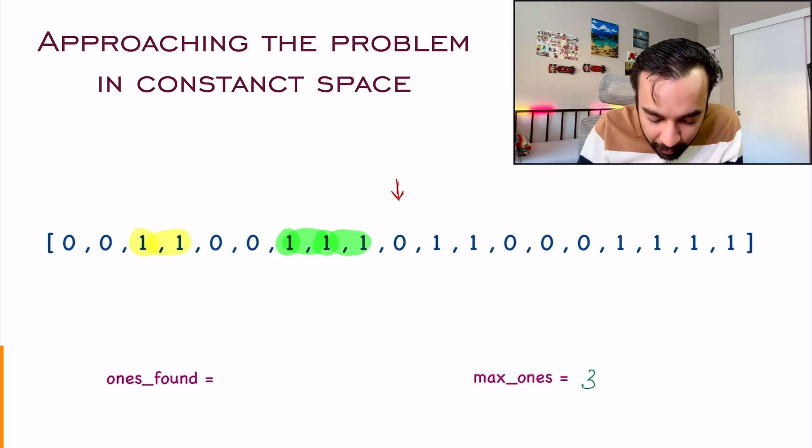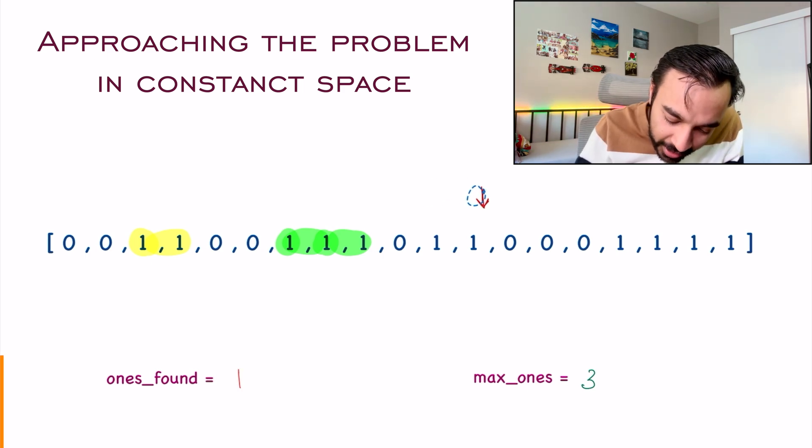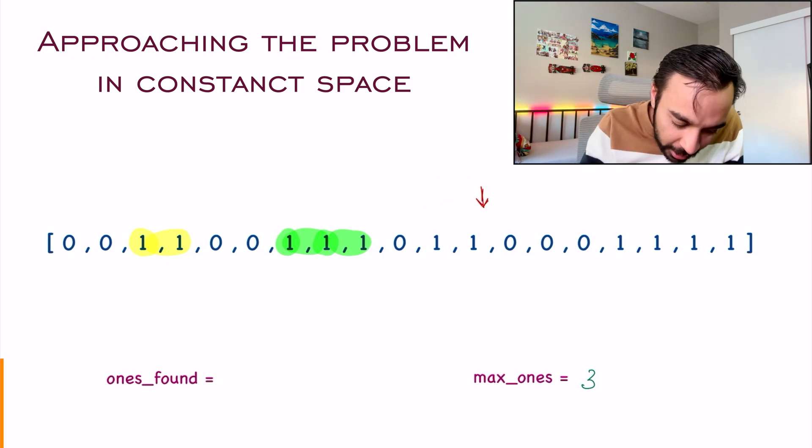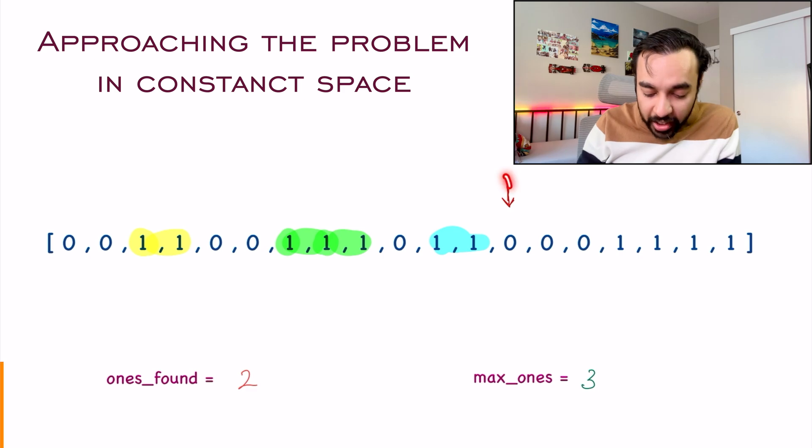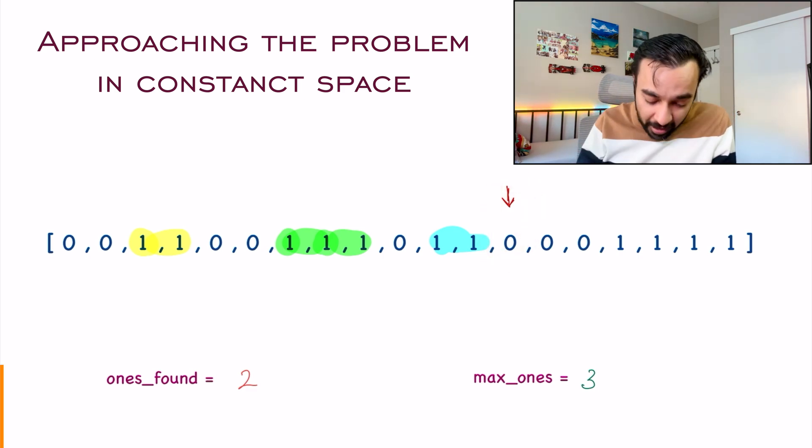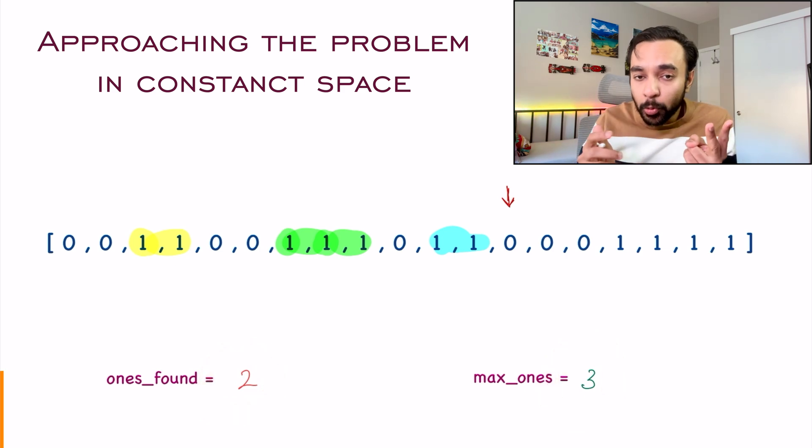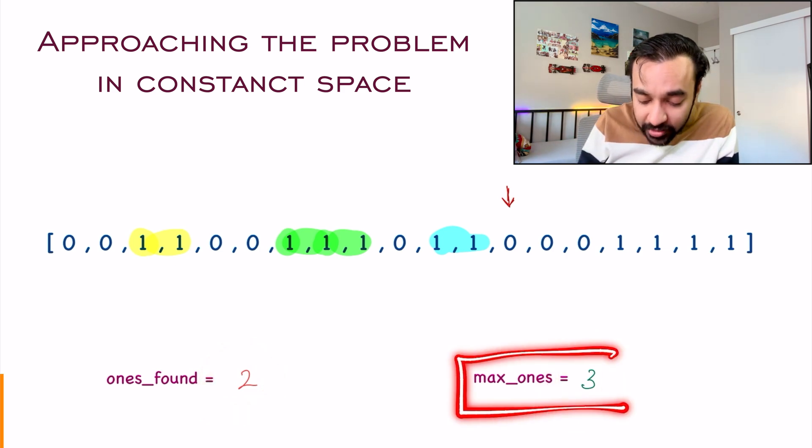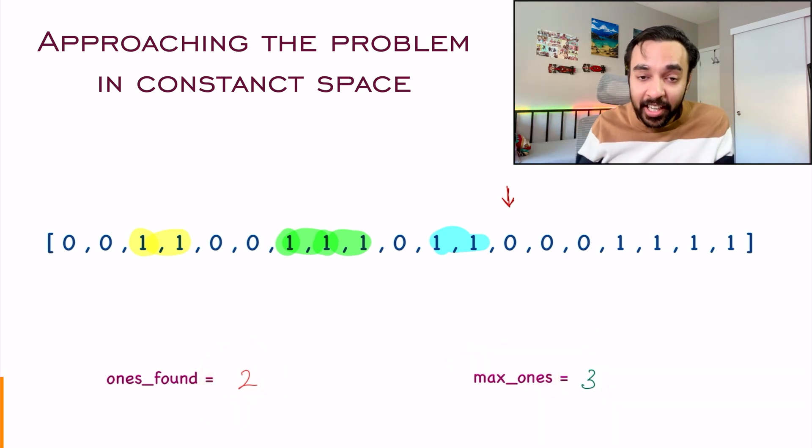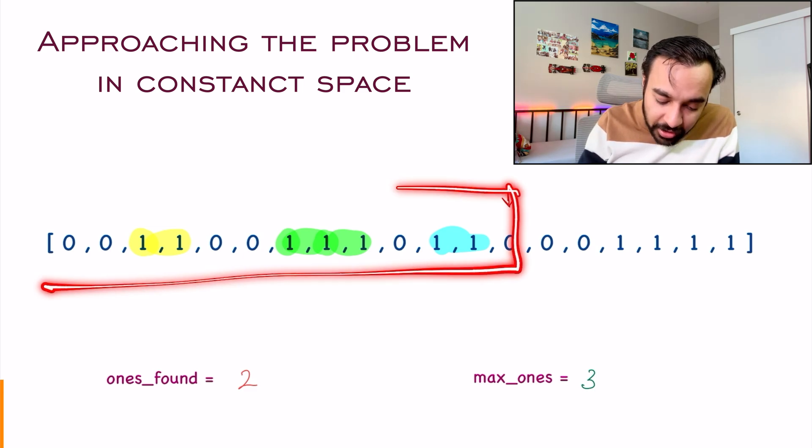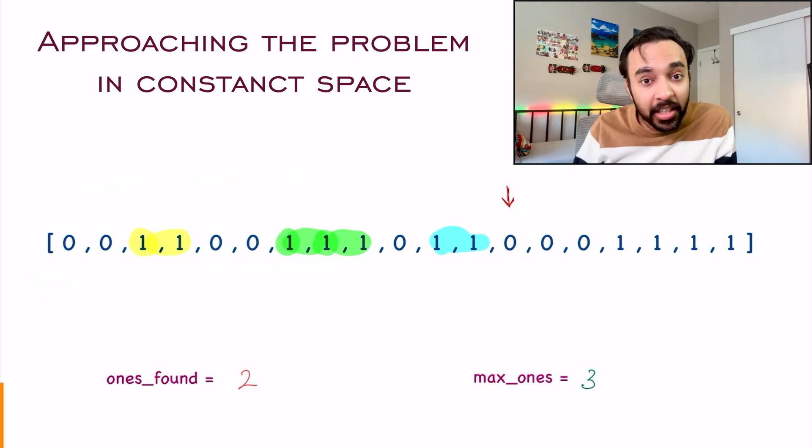So now let us keep moving ahead. As soon as I move ahead, I get a one again. So we are gonna keep a track. Move ahead now. It is a one again. So I update my value. Move ahead and now you get a zero. And this is where you stop. Once again, you will compare both of these values. So I got two more ones. But the maximum consecutive ones, they are still three, correct? So if your array was up till here, your answer was three, right? So we are gonna just keep on repeating the same process all the way up to end.